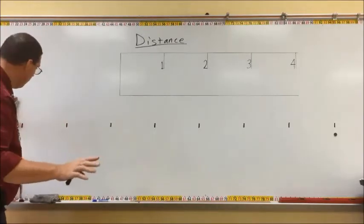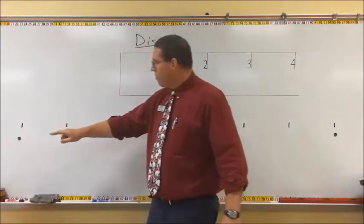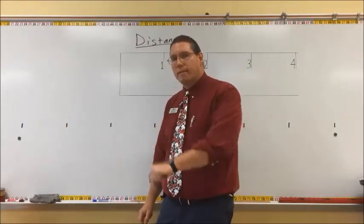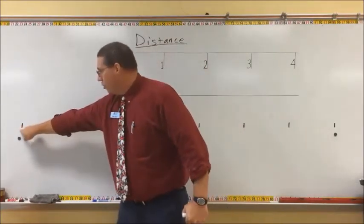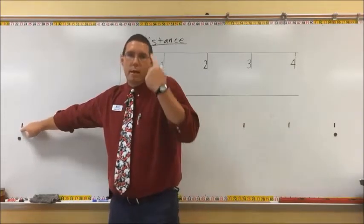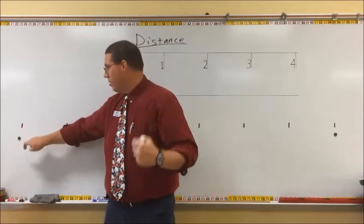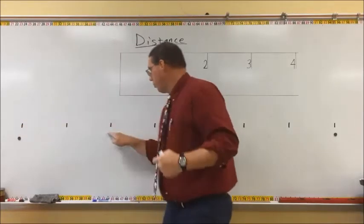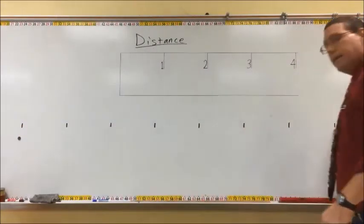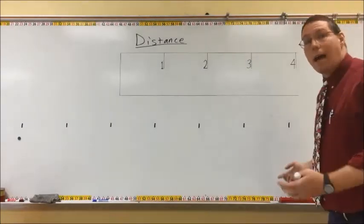But here's what a lot of people do - here's where the mistake comes in. When they start counting the distance, when they put their finger here to start counting, they say one. So they say the distance is one, two, three, four, five, six, seven, eight. But that is incorrect. The distance is not eight.